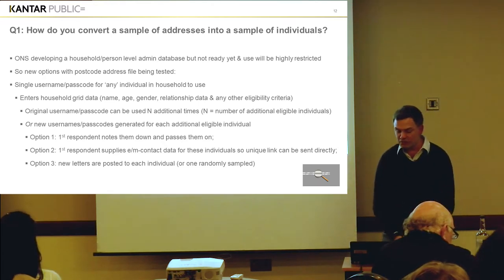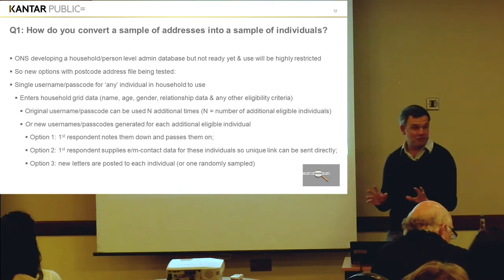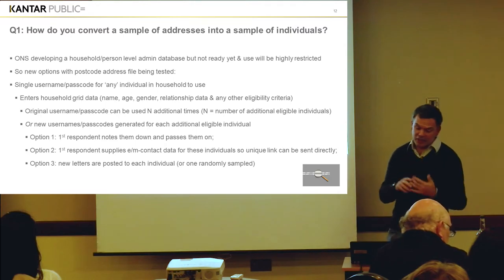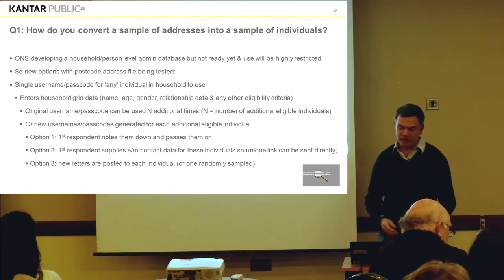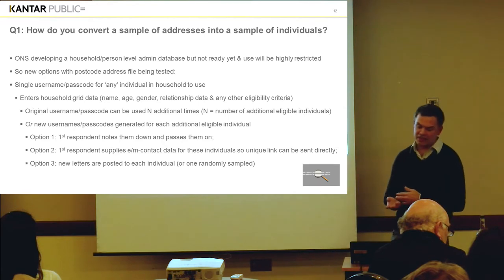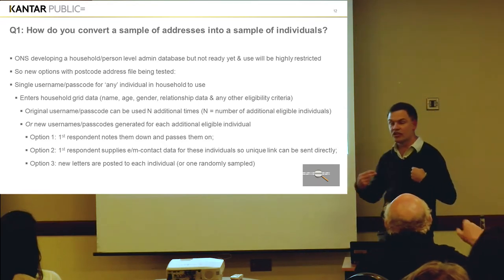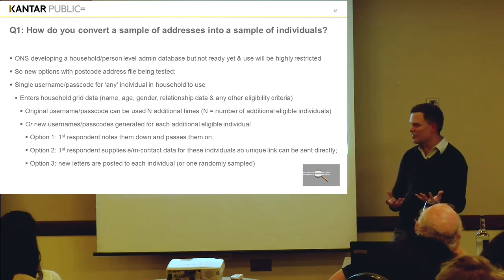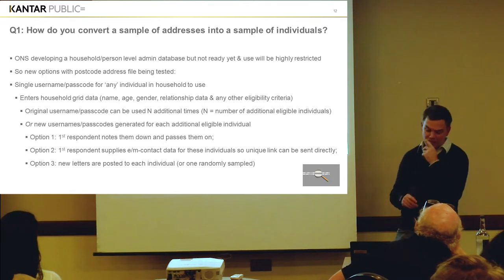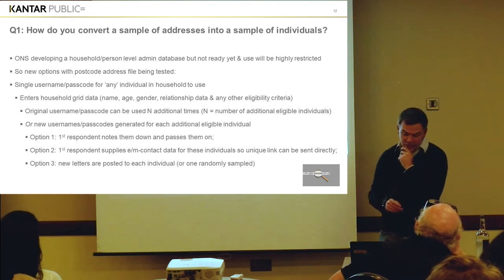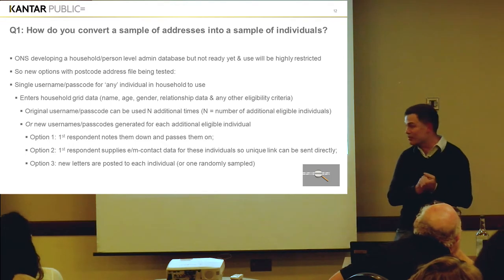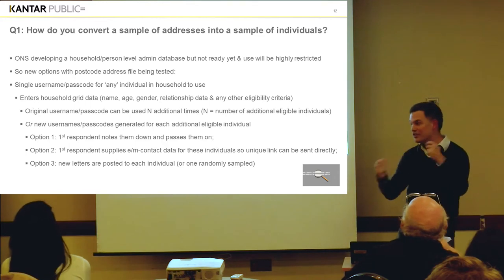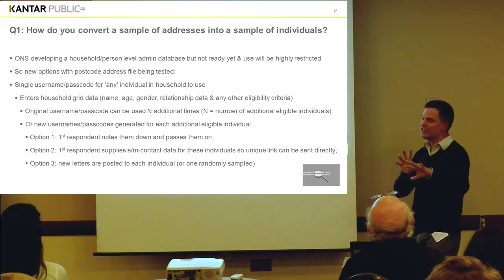There are lots of options you could use. The first respondent could note all these new codes down and pass them on — very low-fi. The second option is that the first respondent gives email or mobile contact data for the other individuals, and then the research agency can send a link directly to those individuals. But again, you've got to collect a lot of information from one person and there's likely to be a lot of non-compliance. The third option is that as long as you've got the names of those individuals, you can post new letters out with new codes and they can go and complete the survey. So there are lots of things still to be done.